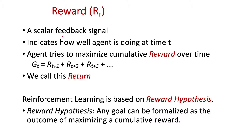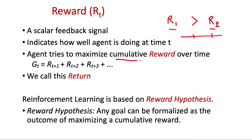Reward is a scalar feedback signal and it indicates how well the agent is doing at a given time. It will be useful in comparing which reward is better, R1 or R2. We should be able to put different rewards on some scale so we can compare them, which will help the agent in optimizing its policy. The policy which yields more cumulative reward will be a better policy. The main goal of the agent is to maximize the cumulative reward over time. It's not necessary that the immediate reward should be maximum — that's why it's different from a greedy algorithm. We call this cumulative reward a return.